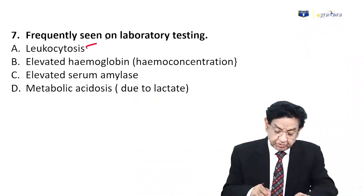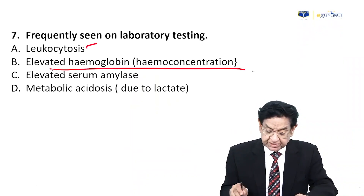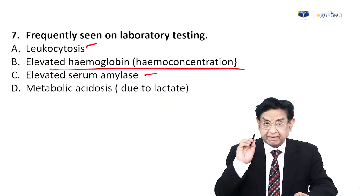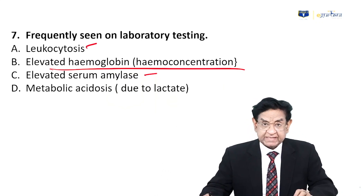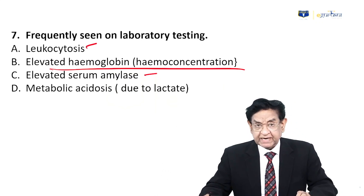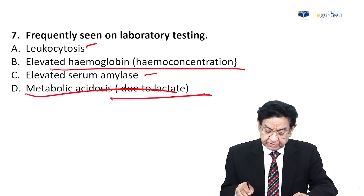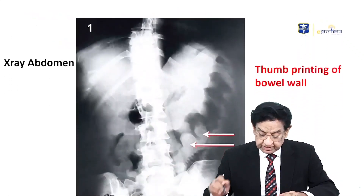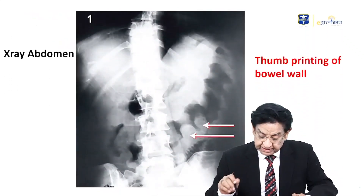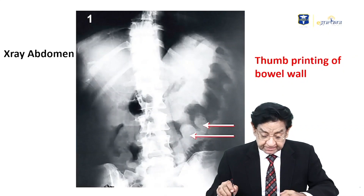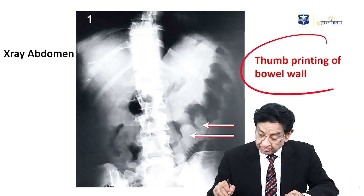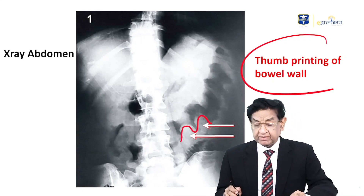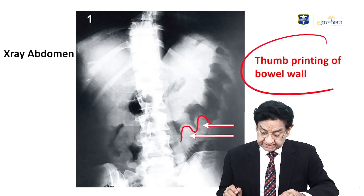Labs frequently show increased WBC (leukocytosis). Hemoconcentration can lead to increased hemoglobin. Amylase level may be high — remember it's not pancreatitis, as amylase can be raised in non-pancreatic conditions. Metabolic acidosis due to increased lactate can also occur. On X-ray, a thumbprint sign in the bowel wall is the classical finding — thumbprinting of the bowel wall is the hallmark imaging feature.